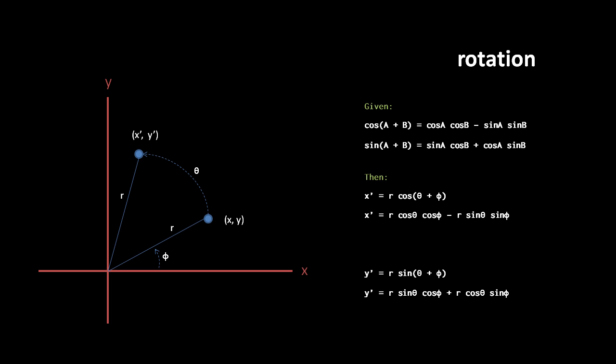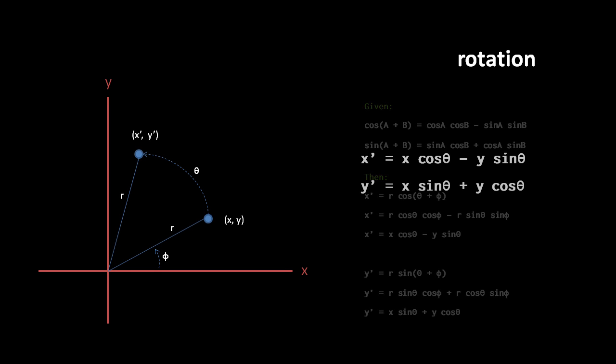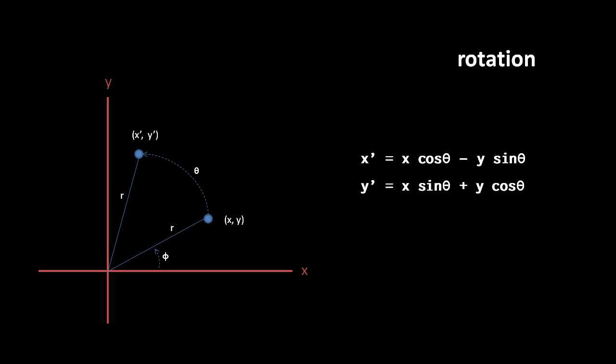Now, by the definition of sine and cosine, r cosine phi equals x, and r sine phi equals y. So we can simplify both of these equations, removing all references to r and phi. We end up with x prime equals x cosine theta minus y sine theta, and y prime equals x sine theta plus y cosine theta. And that's our simple formula for rotation, which conveniently doesn't require us to compute either r or phi, making it more efficient.